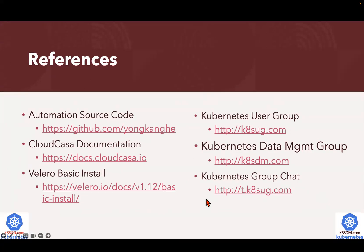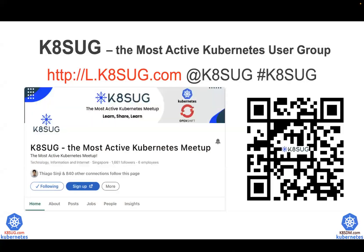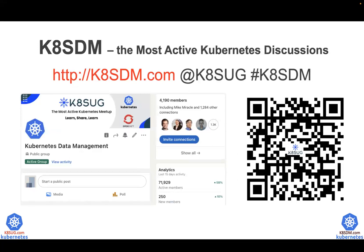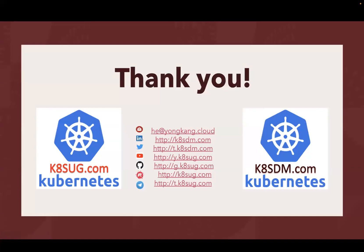Just to wrap it up with a few reference links. Automation code is available from GitHub, the CloudCasa documentation, and the Velero basic installation documentation. Feel free to join our user group — Kubernetes user group, data management user group, and our popular Kubernetes Telegram group chat. Here is a link and QR code to join the most active Kubernetes user group, known as KSUG, and also KSDM — the most active Kubernetes discussions group, with almost 4,200 members. Thank you very much for watching — contact me by any one of the links listed here.